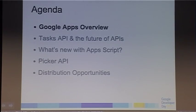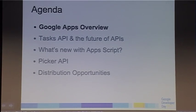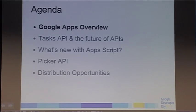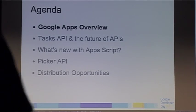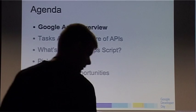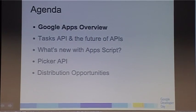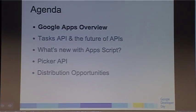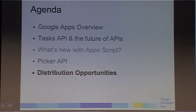The agenda: first we're going to do a very quick Google Apps overview for those who don't know what Google Apps is. Then we'll talk about the Tasks API and the future of our APIs. Then we're going to talk about what's new in Apps Script, quickly cover the Picker API which we launched a few months ago, and then talk about distribution opportunities.